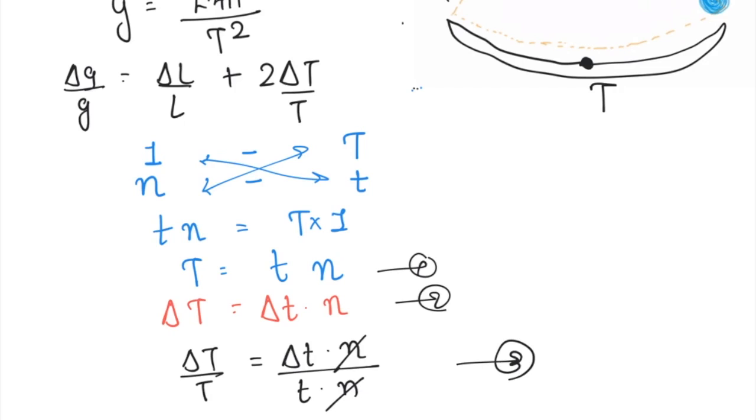So finally, now from our equation, delta G by G equals delta L by L plus 2 delta T by T. If we put all the values, you will easily get the relative error in gravity. You can also find percentage error by multiplying relative error by 100.